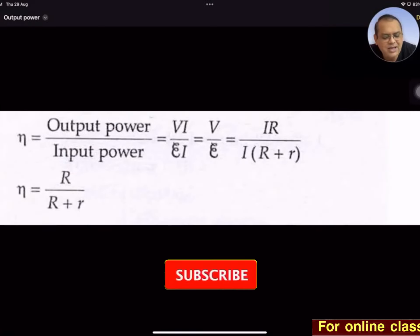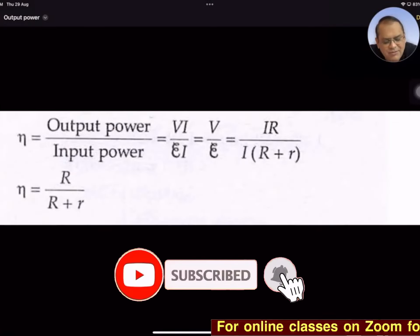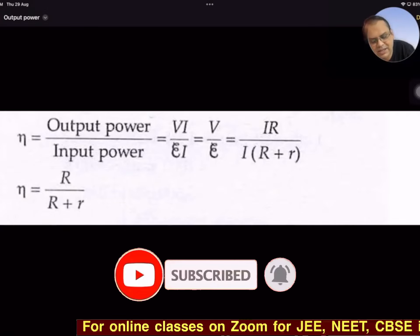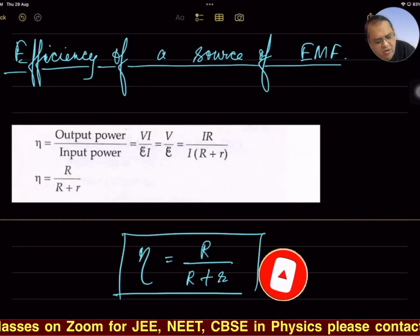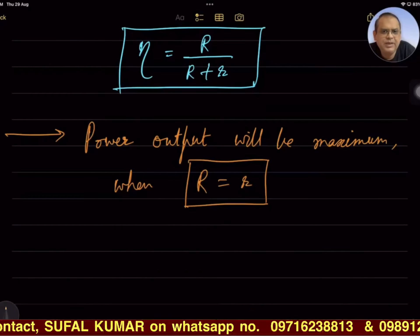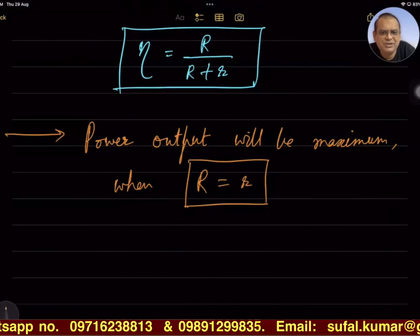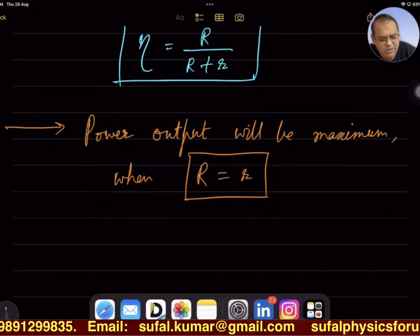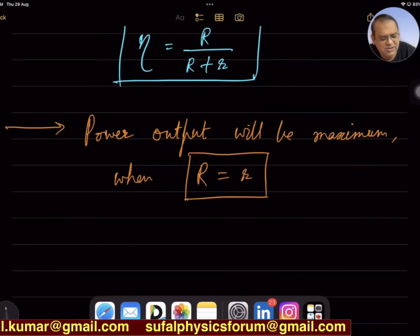After cancellation of I, we get V upon E. This way we obtain efficiency as output upon input. Total external resistance equals total internal resistance of the circuit.